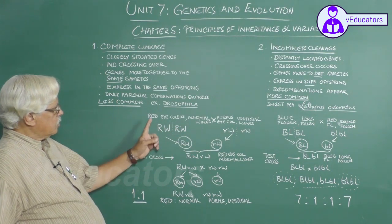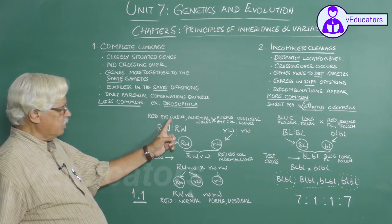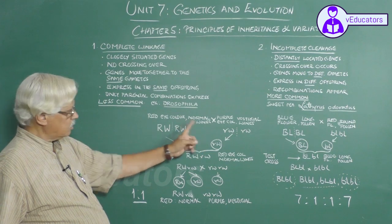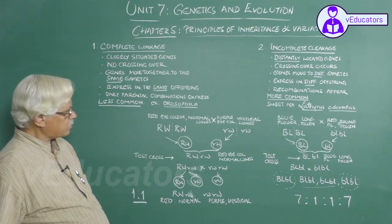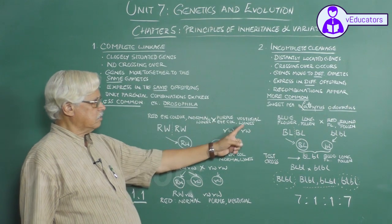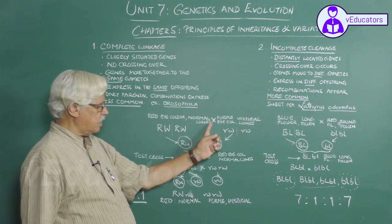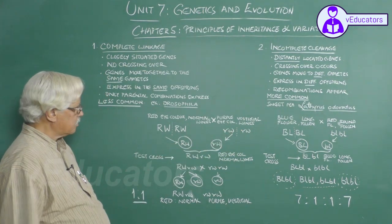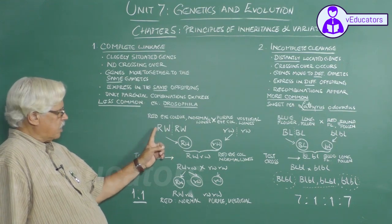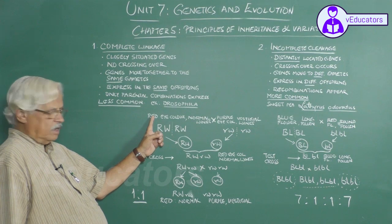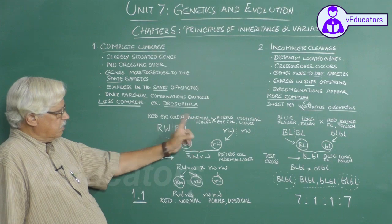One Drosophila with normal red eye color and normal wings is crossed with another Drosophila having purple eye color and vestigial wings. Capital R is dominant for red eye color, and capital W is dominant for normal wings.